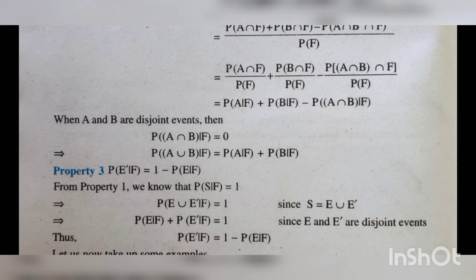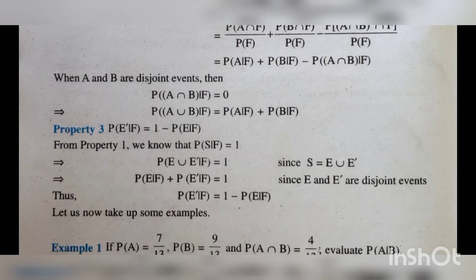Then we come to the third property: P of E complement given F is equal to 1 minus P of E given F. From property 1, we know that P of S given F is equal to 1. Since S equals E union E complement, we can write P of E union E complement given F equals 1. Then P of E given F plus P of E complement given F equals 1, so P of E complement given F equals 1 minus P of E given F.